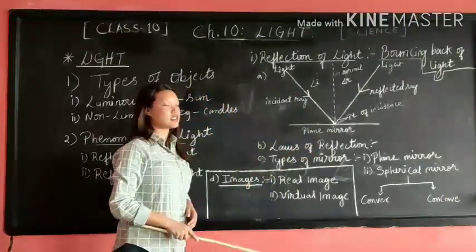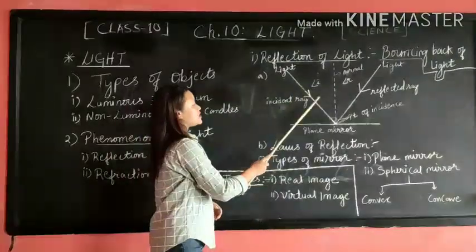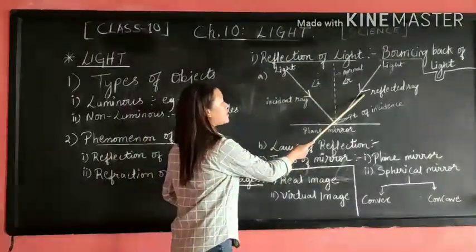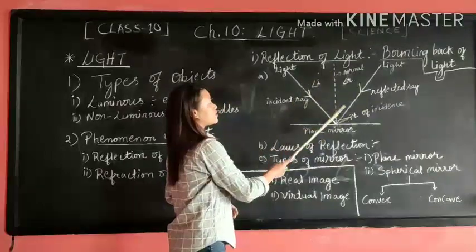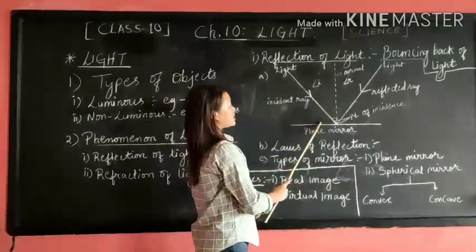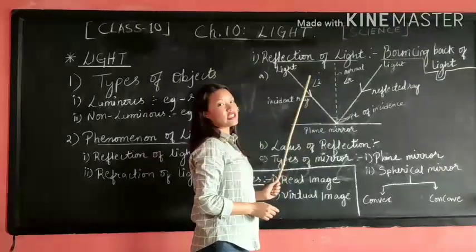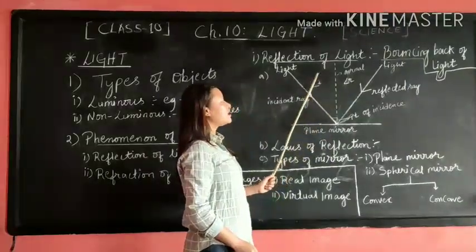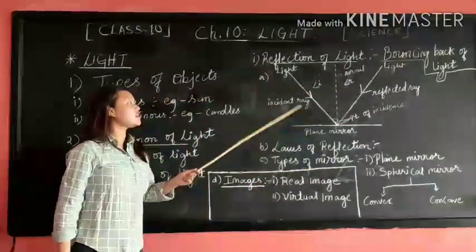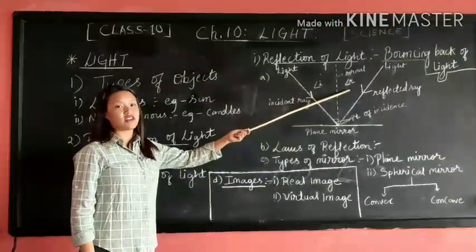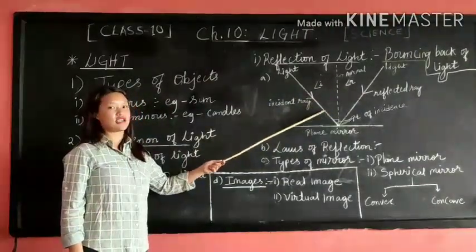The second law states that the angle between the incident ray and the normal is always equal to the angle between the reflected ray and the normal. So the second law states that the angle of incidence and the angle of reflection are always equal to each other.